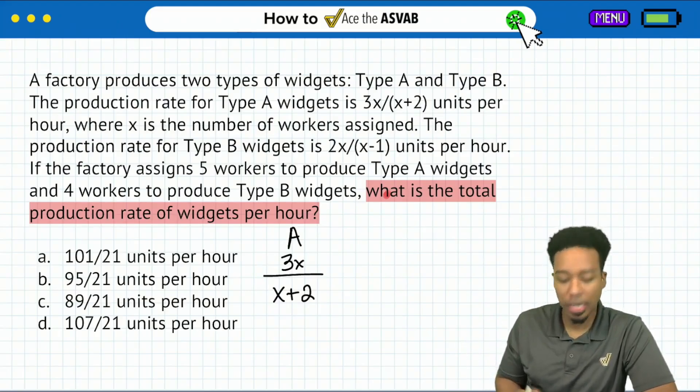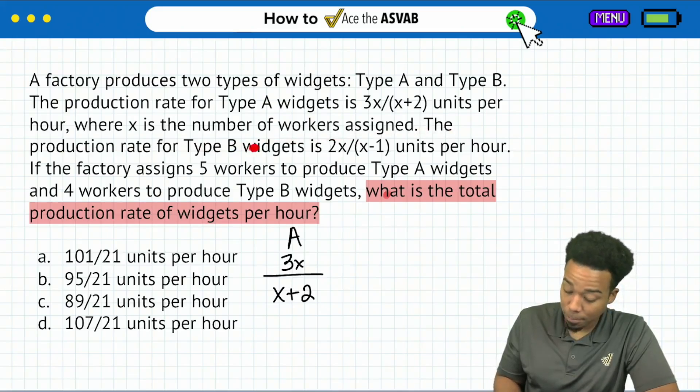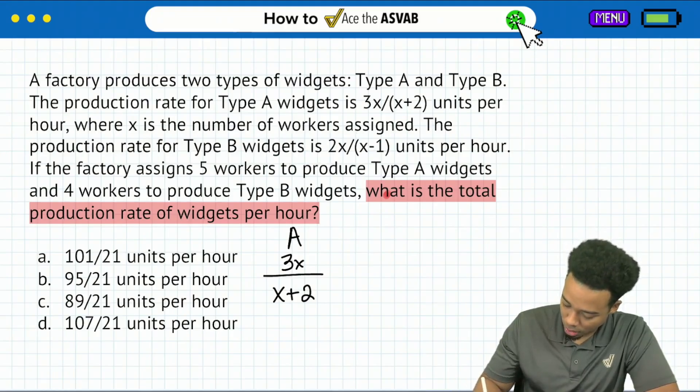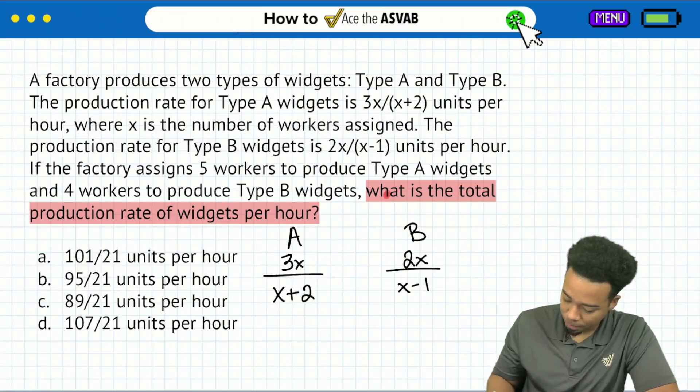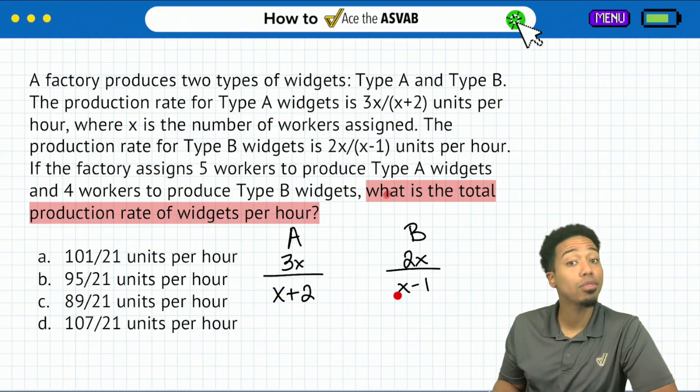Okay, cool. So then it says over here, the production rate for type B widgets is this fraction. So I'm going to write type B over here. And I'm going to say 2x over x minus 1. And again, the x represents the number of workers assigned.